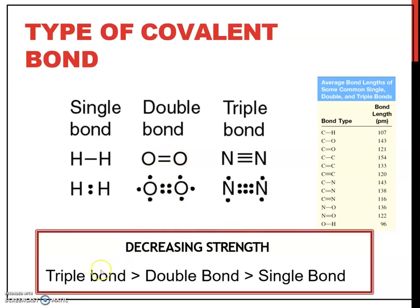For the strength of the bond, triple bond has higher strength, more stronger compared to double bond, and double bond is more stronger than single bond. This is because for triple bond, high energy is needed to break the bond compared to double bond. For single bond, slightly lower energy is needed to break the bond compared to double and triple bond.